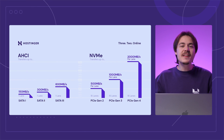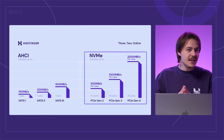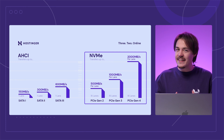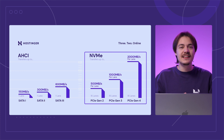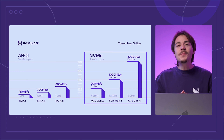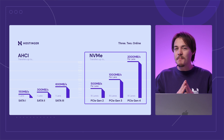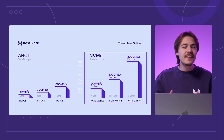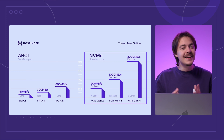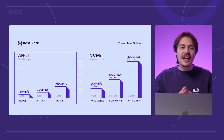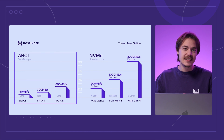Let's dive deeper into how NVMe compares to SATA SSDs, starting with data transfer speed. NVMe allows SSDs to connect directly to the CPU via the PCIe bus and transfer data via high-speed lanes. A single Gen 4 PCIe lane can transfer up to 2,000 MB per second, with NVMe SSDs using up to 4 lanes. In comparison, SATA only has one lane, which can only transfer up to 600 MB per second.